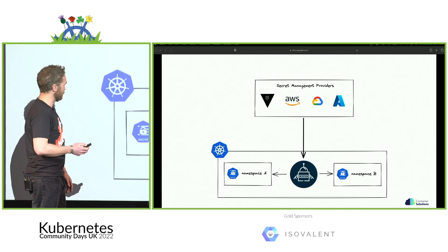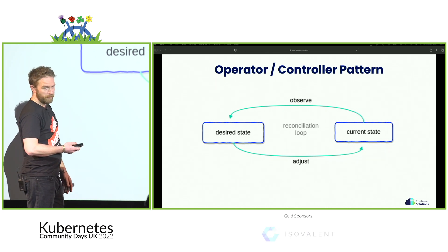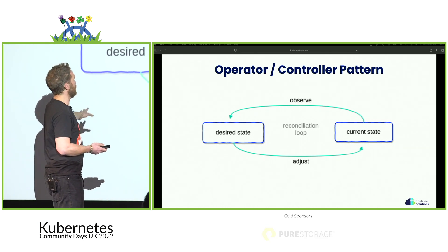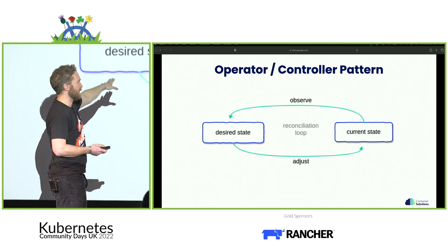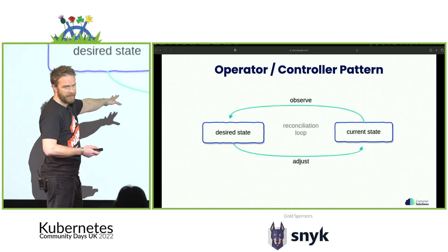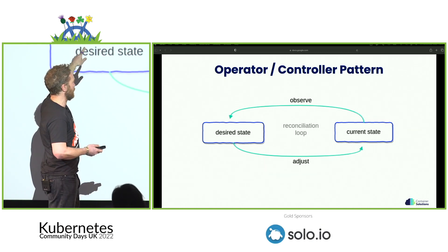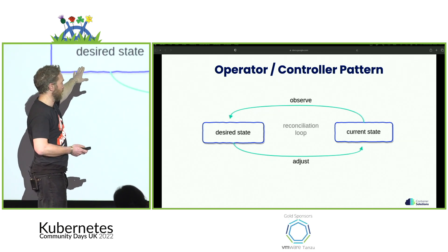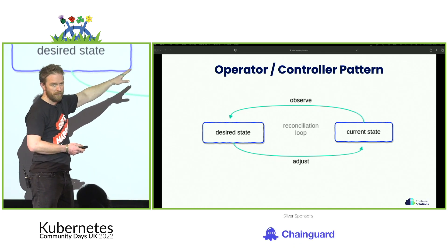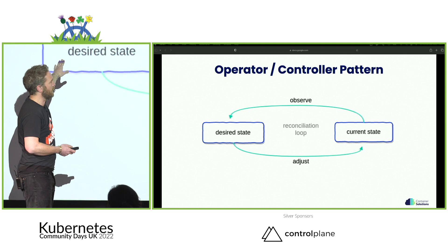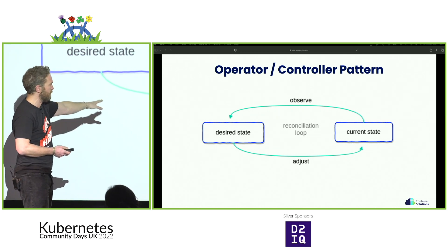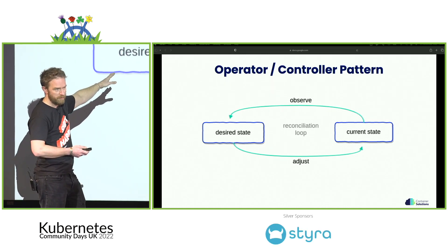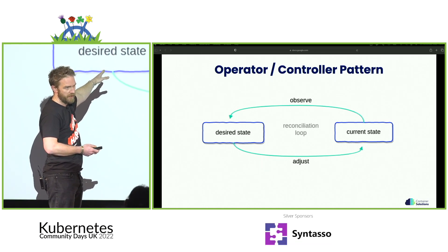We're talking about an operator here, so it's based on the controller pattern. The basic idea is that you have a reconciliation loop which goes round again and again, basically forever. You set the length of your reconciliation loop, and each time you go round, the desired state set in your code will be observed to see whether it's in line with the current state. If it's not in line, your operator is going to adjust through the Kubernetes API to bring it in line, so that current state and desired state are the same until the next time it goes round the loop.